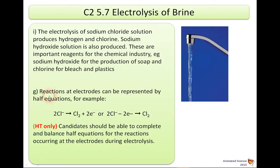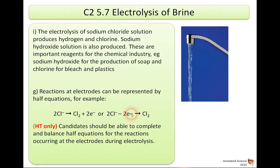Syllabus item G looks at the reactions of electrodes and how they can be represented by half equations. For example, two Cl⁻ go to Cl₂ plus two electrons, or: 2Cl⁻ − 2e⁻ → Cl₂. Higher tier candidates should be able to complete and balance half equations for the reactions occurring at the electrodes during electrolysis.